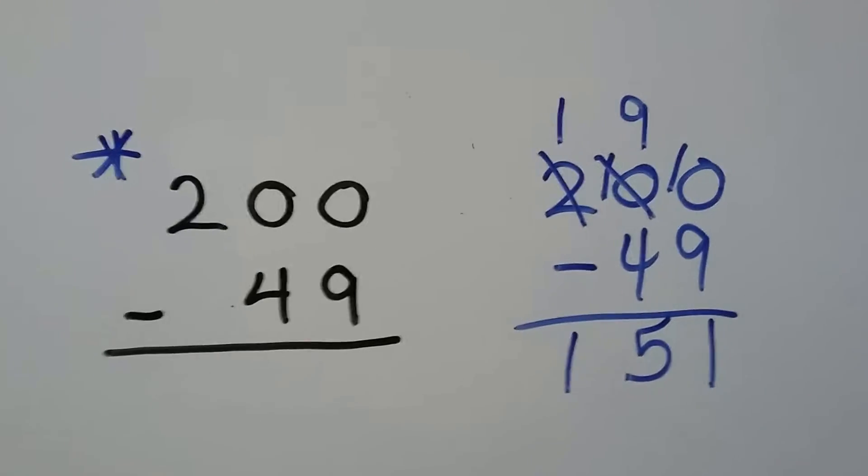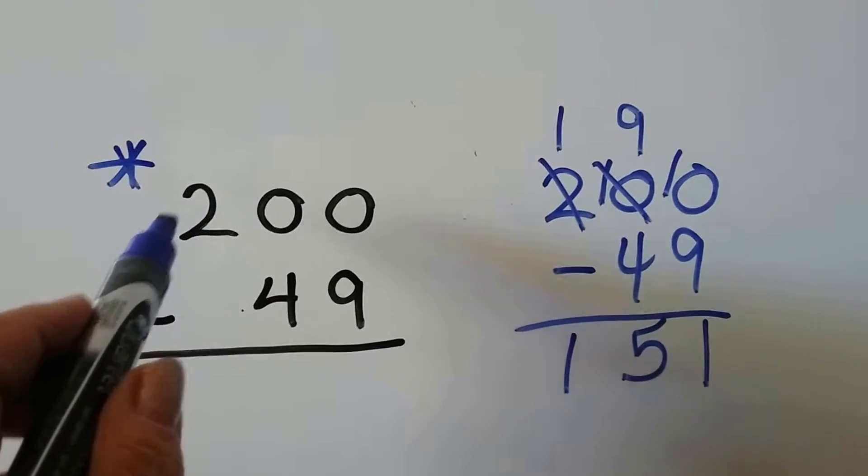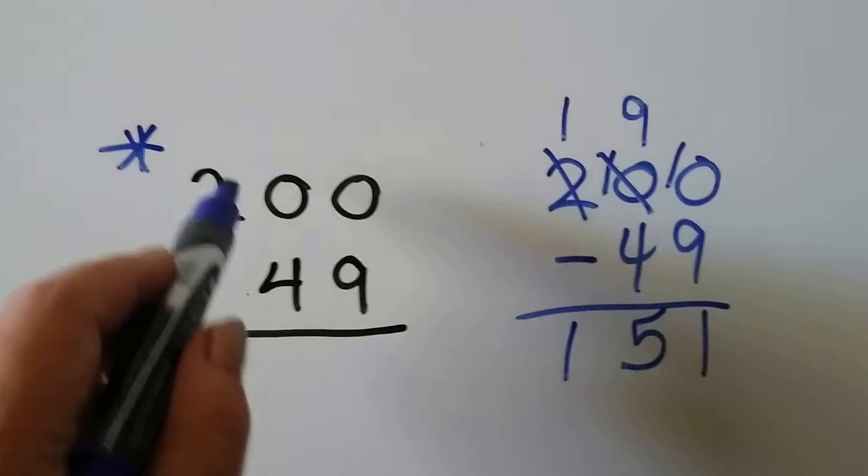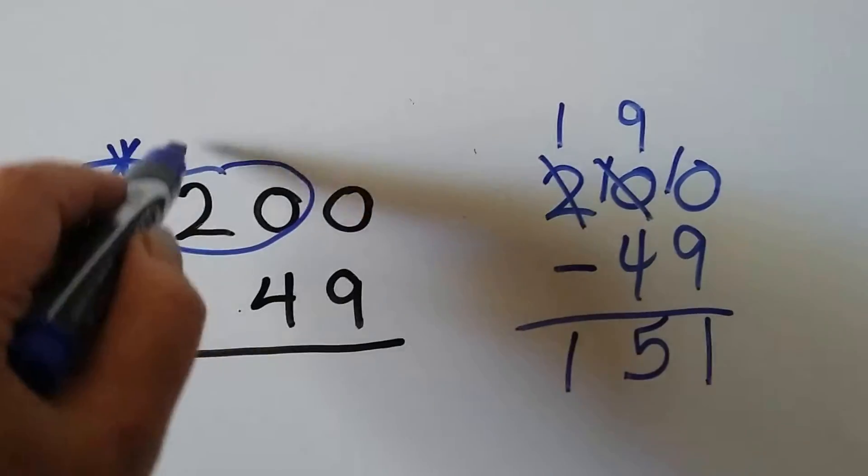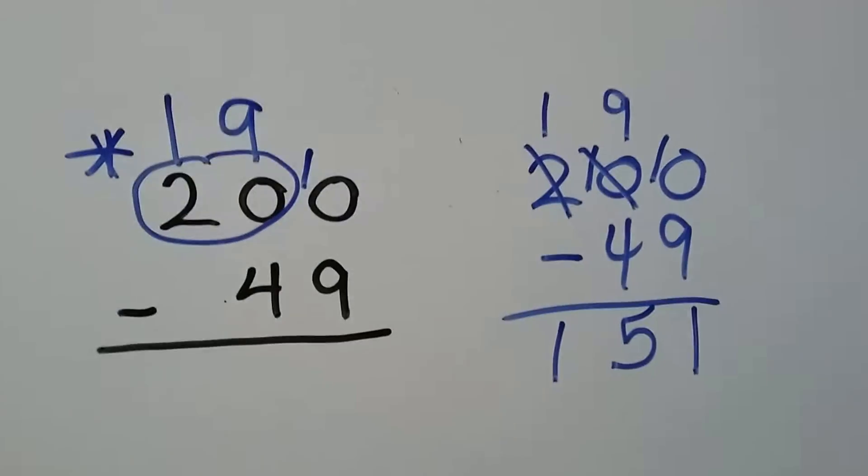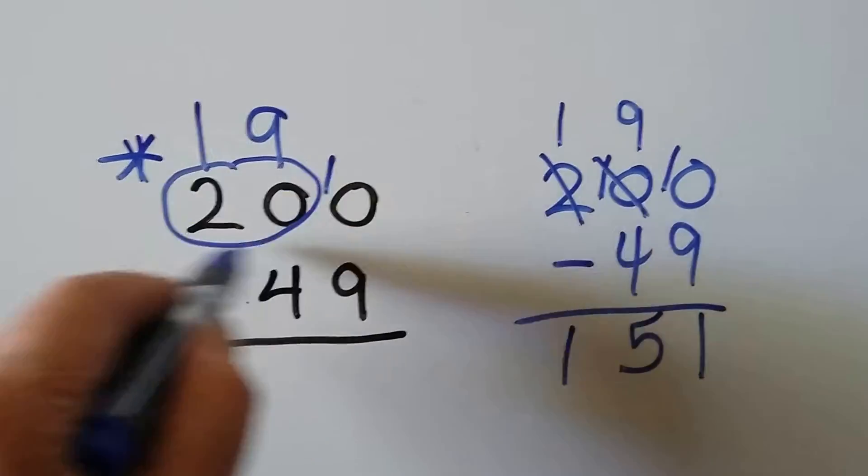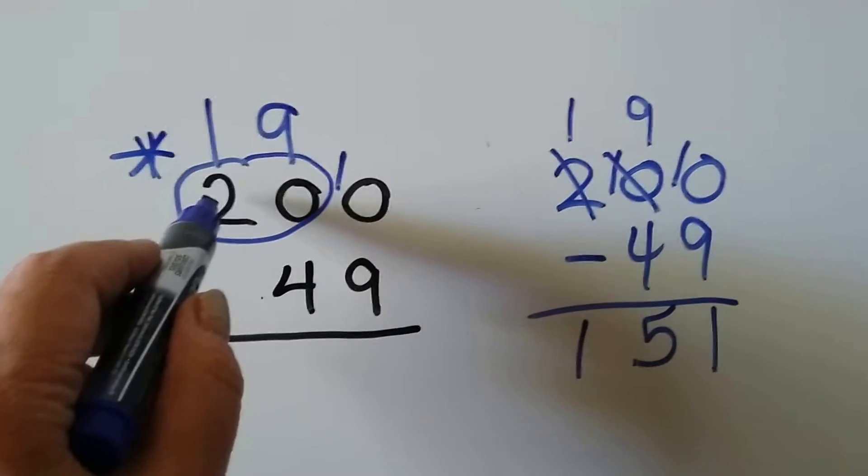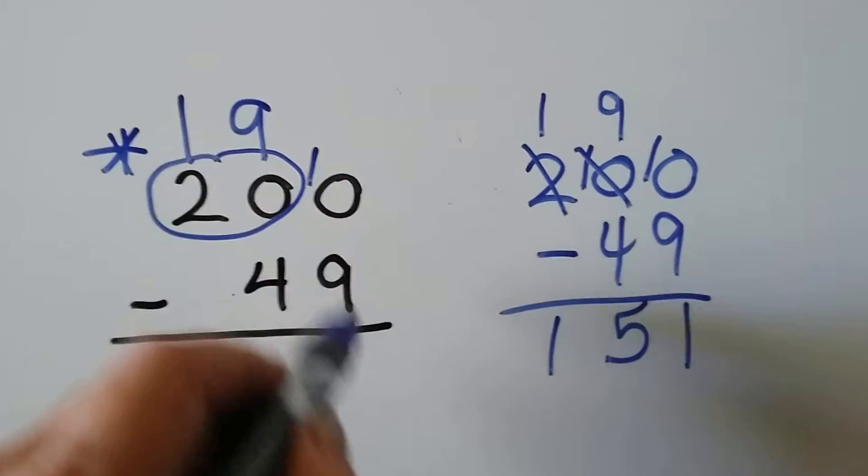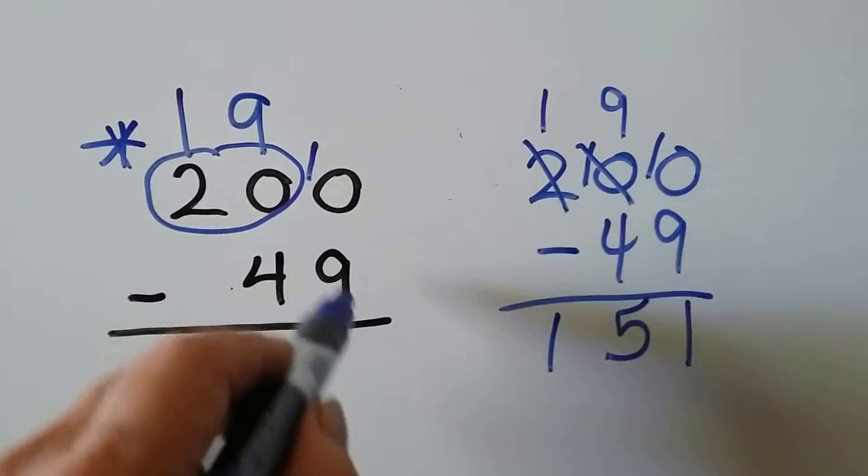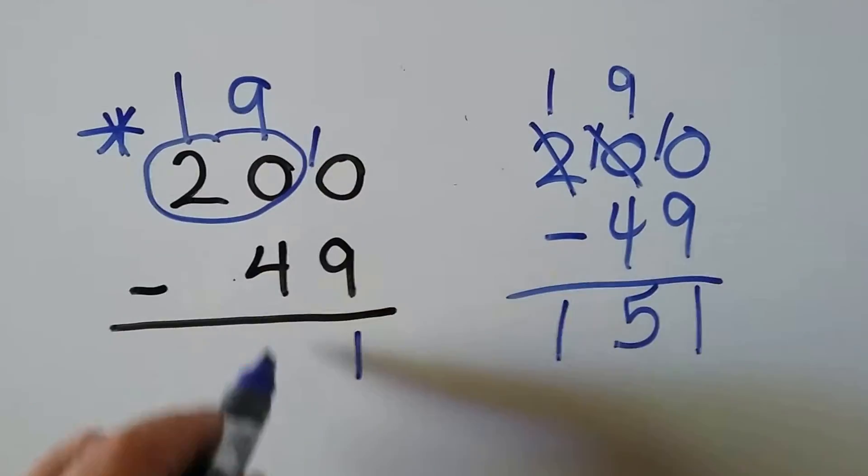Now, if you get really good at this, you know that 1 less than 200 is 199. And 1 less than 20 is 19. So this can become a 19 and that can become a 10, which is basically what we did here. But we're going a lot quicker because we're combining these place values. Instead of looking at this as a 200, we're looking at it as a 20 and a 0. That becomes a 19. The 20 becomes a 19 and it gives 1 to the tens place. 10 take away 9 is 1. 19 take away 4 is 15.